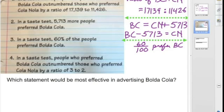Number 4 says, in a taste test, people who preferred Bolda Cola outnumbered those who preferred Cola-Nola by a ratio of 3 to 2. So, again, Bolda Cola to Cola-Nola is equal to 3 to 2.